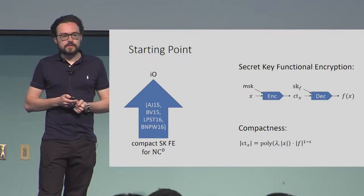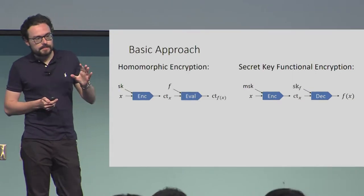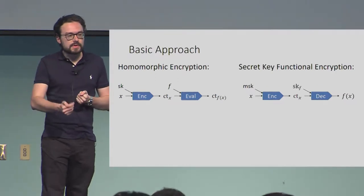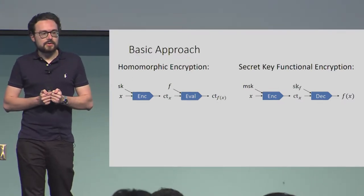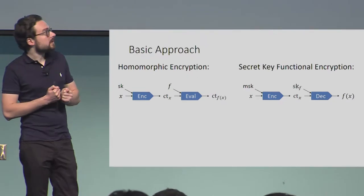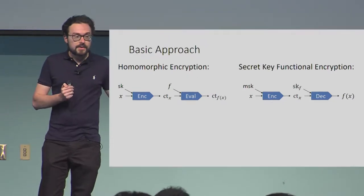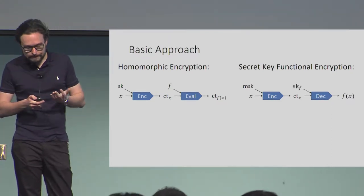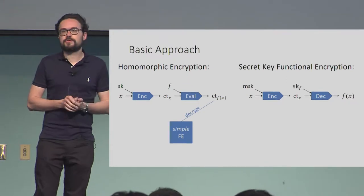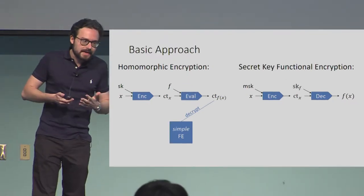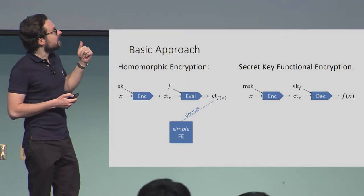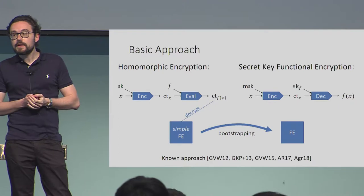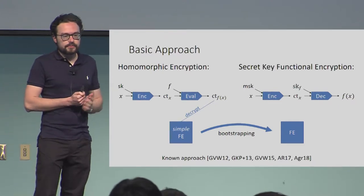How can we construct such an FE scheme? The basic approach is to compare it to homomorphic encryption, which has a similar structure — it also allows you to encrypt some value x and then anyone can compute functions f on the ciphertext to obtain a ciphertext for f of x. The difference is that the ciphertext reveals nothing about f of x. So we need to find a way to decrypt such that this only reveals f of x but not x. The idea is to use functional encryption to do this decryption. Since we want to construct FE, this inner FE should be for a much simpler class of functions, giving us a bootstrapping from simple FE to full FE.